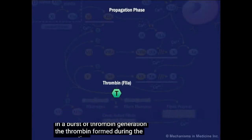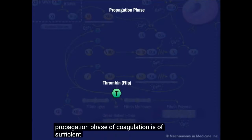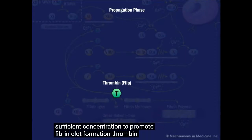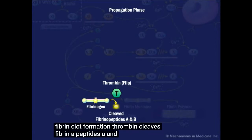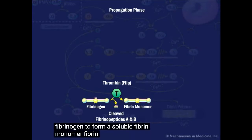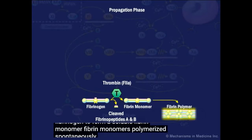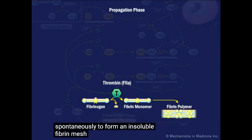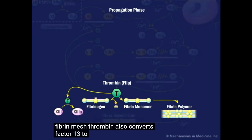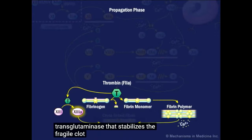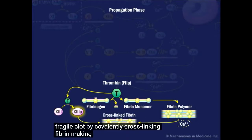The thrombin formed during the propagation phase of coagulation is of sufficient concentration to promote fibrin clot formation. Thrombin cleaves fibrinopeptides A and B from fibrinogen to form a soluble fibrin monomer. Fibrin monomers polymerize spontaneously to form an insoluble fibrin mesh. Thrombin also converts factor 13 to factor 13a, the transglutaminase that stabilizes the fragile clot by covalently cross-linking fibrin, making the fibrin polymer resistant to lysis.